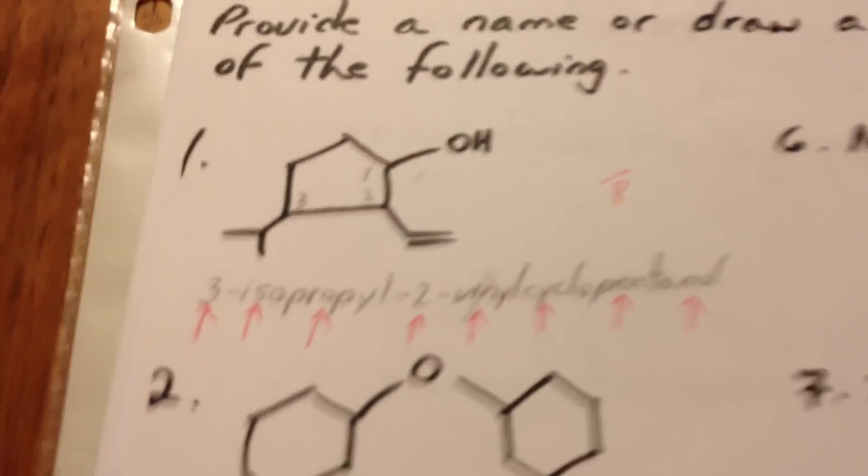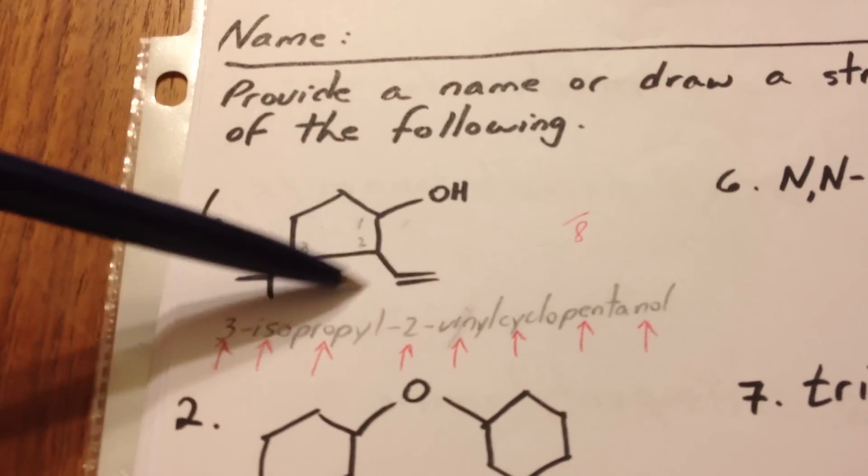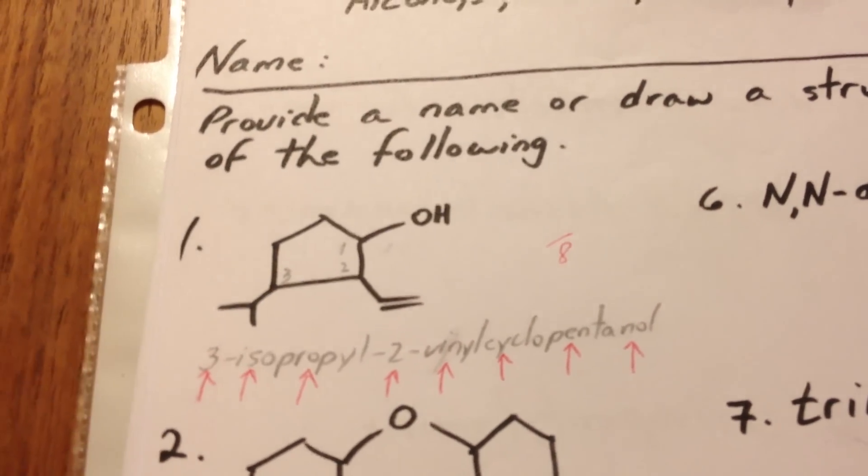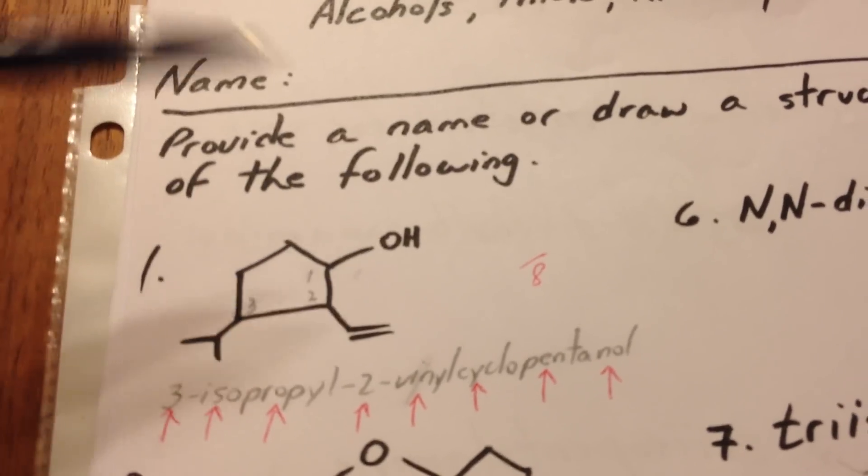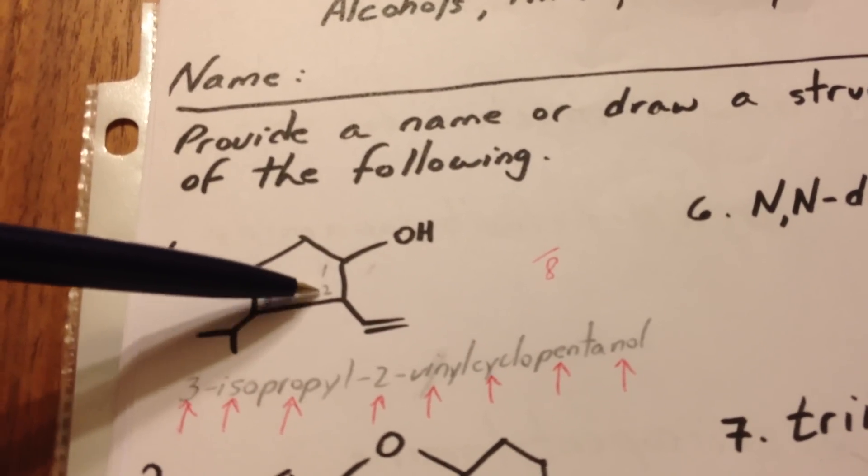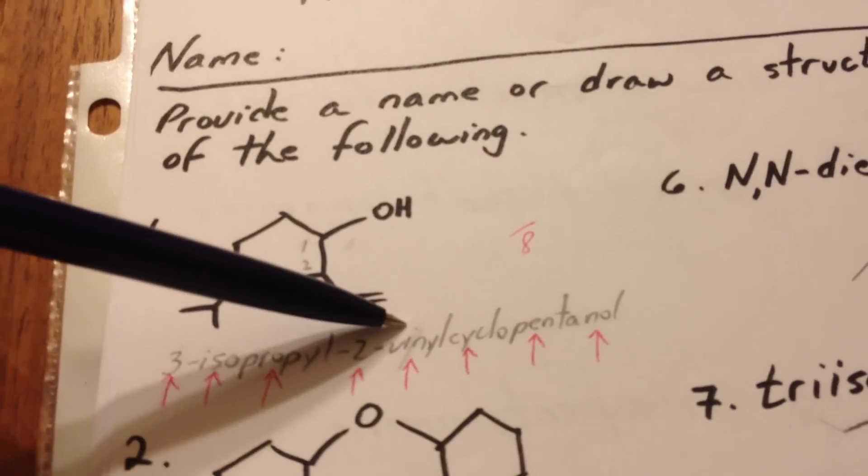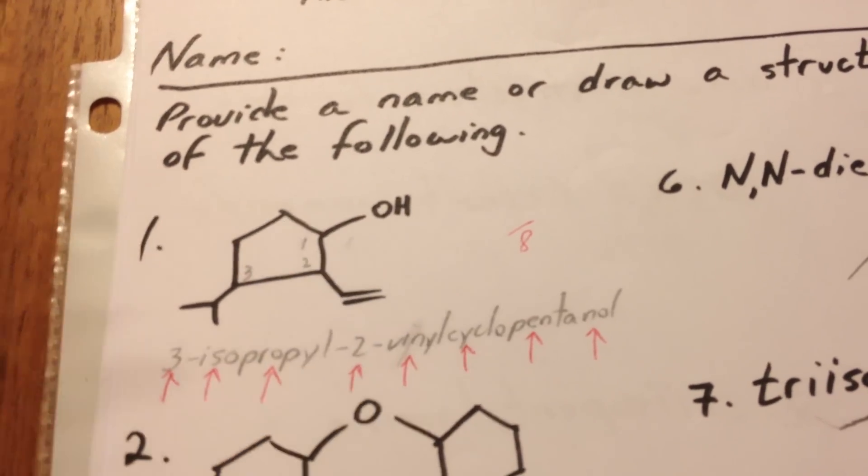The first molecule has a cyclopentane ring with an alcohol, a vinyl group, and an isopropyl group. The alcohol has the highest priority, so we number it 1, 2, 3, and the name will be 3-isopropyl-2-vinyl-cyclopentanol.